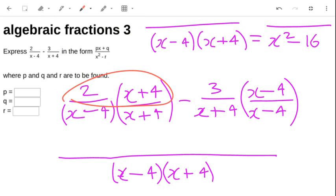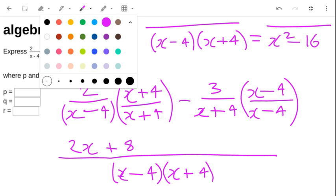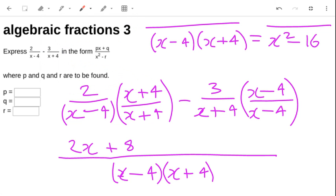So with this thing here, I've got a 2 times an x and 2 times a 4. That gives me 2x plus 8. And with this one, I've got a minus 3 times an x, which is minus 3x. And a minus 3 times a minus 4, which is plus 12. So minus 3x plus 12. Now I count up what I've got.